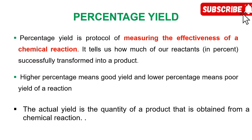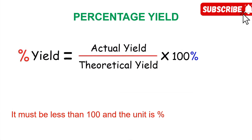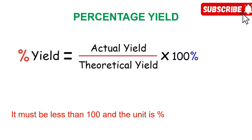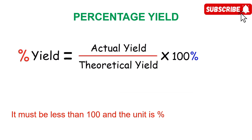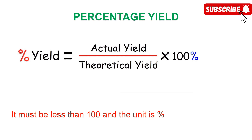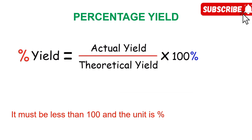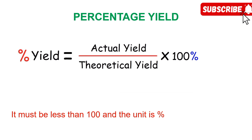To calculate percentage yield, take the actual yield — what you obtain from the reaction in the lab — divided by the theoretical yield, which is obtained by multiplying the moles of the limiting reagent by the molar mass of the product, then multiply by 100%. Note that the percentage yield must always be less than 100% and the unit must be percent. I wish you success in your practical aspects of organic chemistry. Thank you.